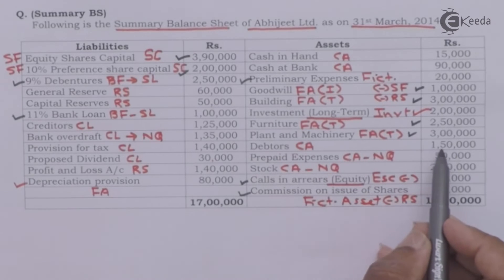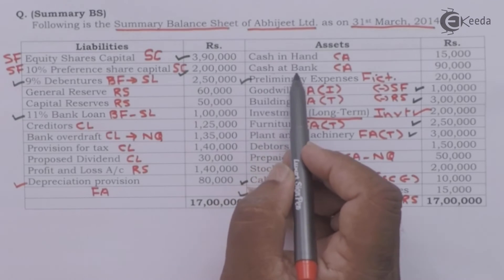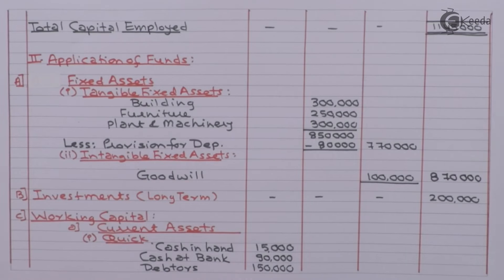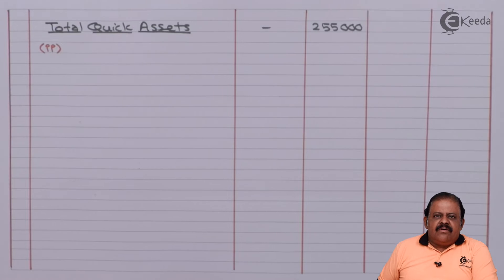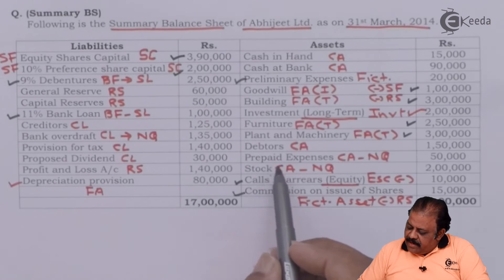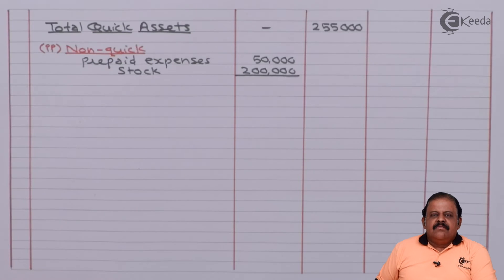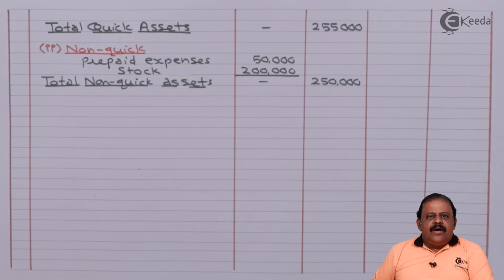Here we have debtors Rs. 1,50,000 which is a quick asset. Prepaid expenses are non-quick. Stock is non-quick. Cash in hand and cash at bank are quick assets. Total quick current assets — cash in hand, cash at bank, and debtors — come to Rs. 2,55,000. Non-quick current assets are prepaid expenses and stock, totalling Rs. 2,50,000. Adding quick and non-quick gives total current assets of Rs. 5,05,000.